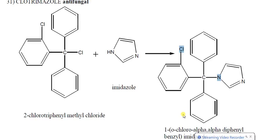Hello, good morning everyone. Upon completion of the antifungal agent topic, the next part is the synthetic method of clotrimazole — how clotrimazole will be synthesized as an antifungal agent. This will be synthesized using the starting material 2-chlorotriphenylmethyl chloride, which reacts with imidazole to form clotrimazole, an imidazole ring-containing antifungal agent.